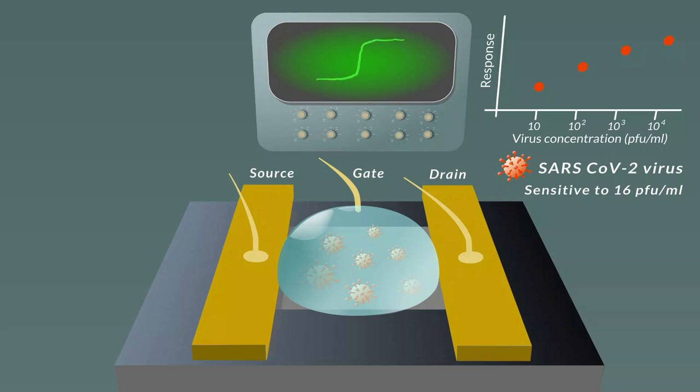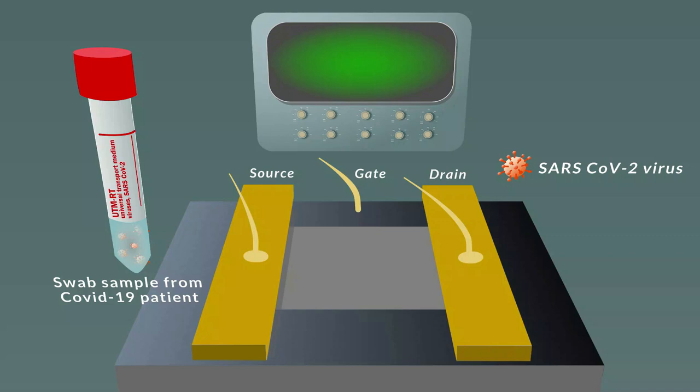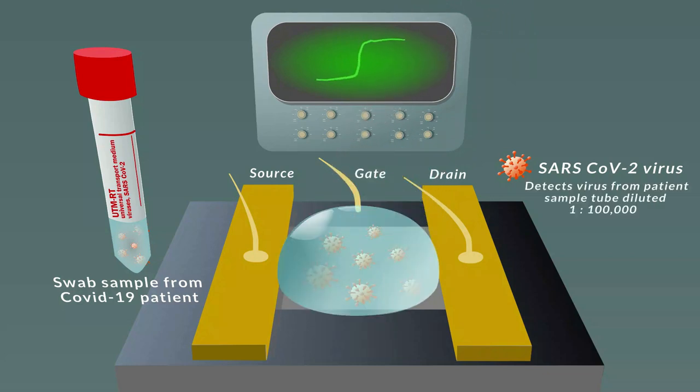To top it all off, they took an actual swab sample from a COVID-19 patient and demonstrated that their device could detect the virus even if diluted down 100,000 fold. The higher the concentration of virus in the sample, the greater signal they saw in their biosensor.